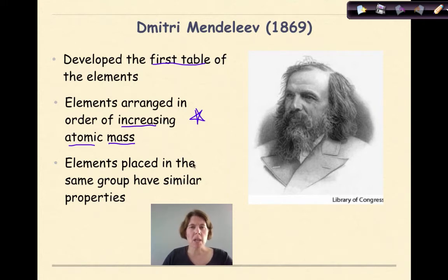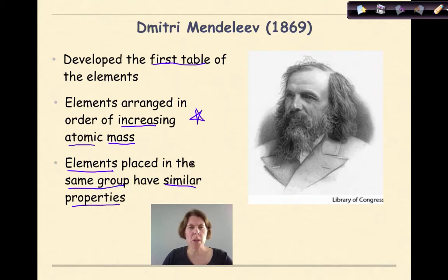The other key thing that Mendeleev did was that he placed elements with similar properties in the same group. He looked at different characteristics of the elements and thought these all look and behave pretty similarly, so he put them together in one group.